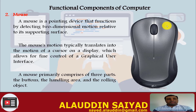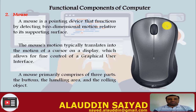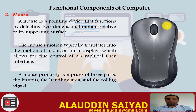Mouse. A mouse is a pointing device that functions by detecting two-dimensional motion relative to its supporting surface. The mouse motion typically translates into the motion of the cursor on the display. As we move the mouse, it sends information to the processing unit about the cursor's movement on the display, which allows for fine control of a graphical user interface.